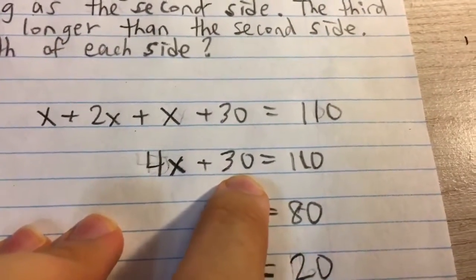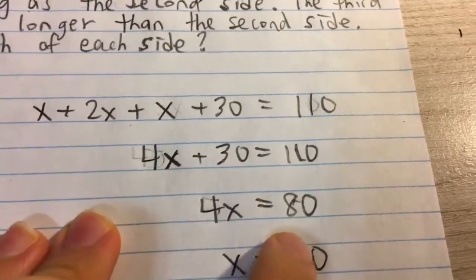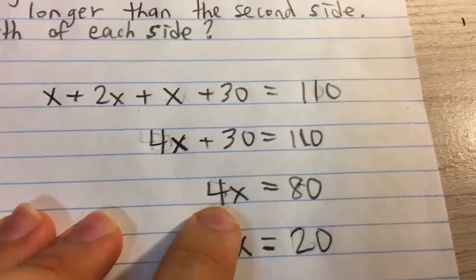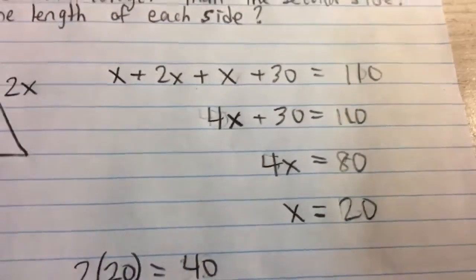Then next we can subtract 30 from both sides. So we get 80 on the right. Finally, we're trying to solve for x. So divide by 4 on both sides, we get x equals 20.